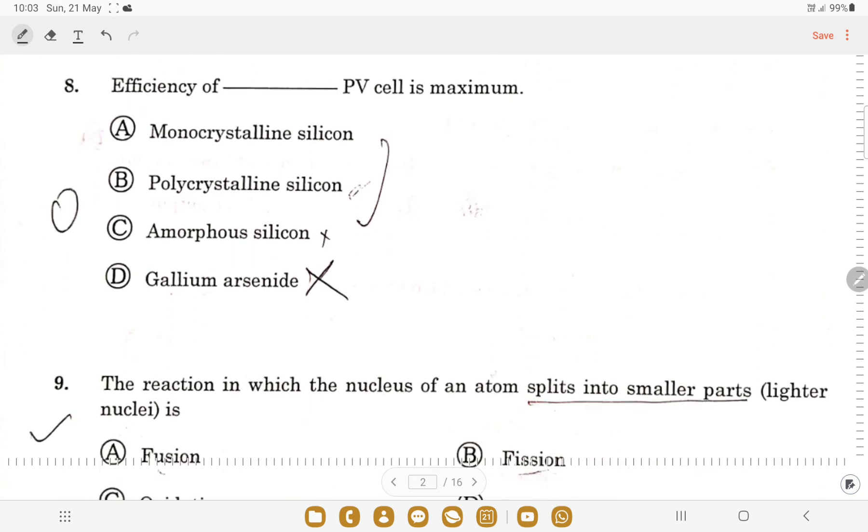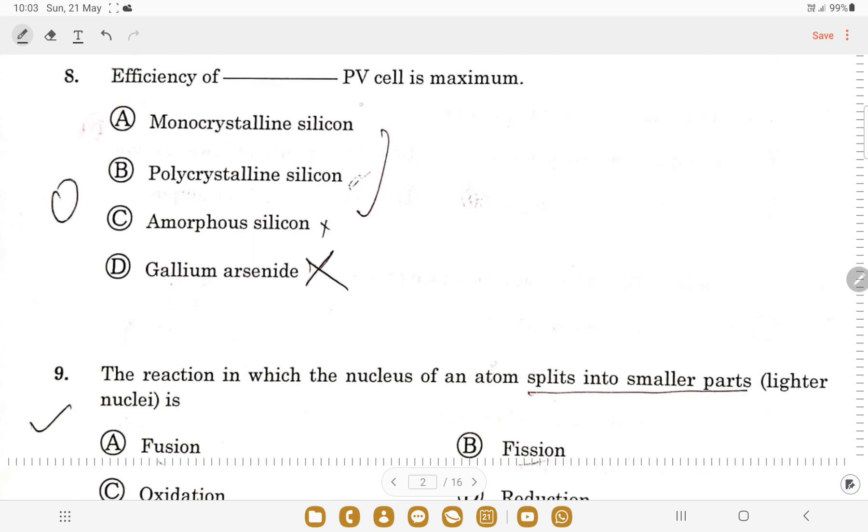Next question: efficiency of which PV cell is maximum? Monocrystalline is about 20%, the others are less than monocrystalline, but gallium arsenide is around 30%. However, it is not normally used because it's very expensive. So it is maximum in gallium arsenide - option D is the correct one.